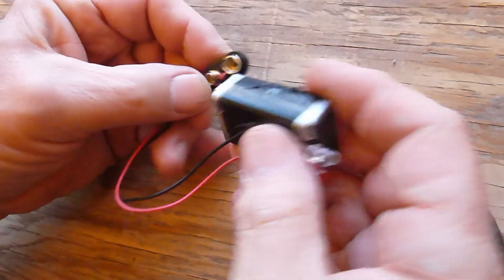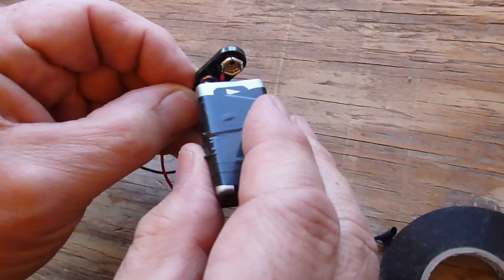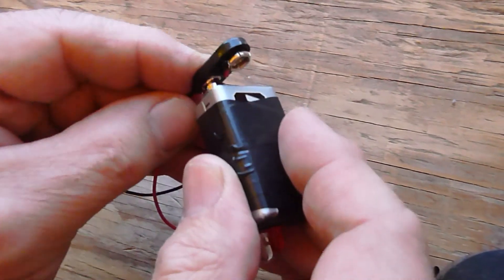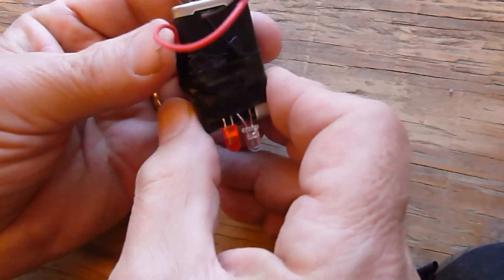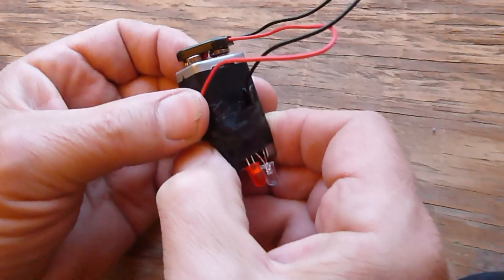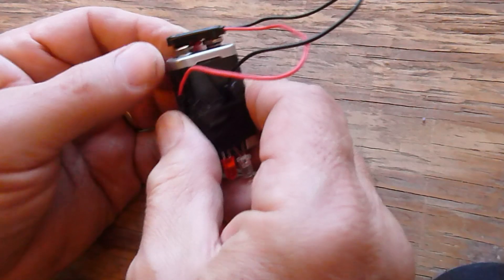Next, we have partially attached the battery connector to the battery. Notice we only press one snap on the battery. We do this since we will use the battery connector as a sliding switch.